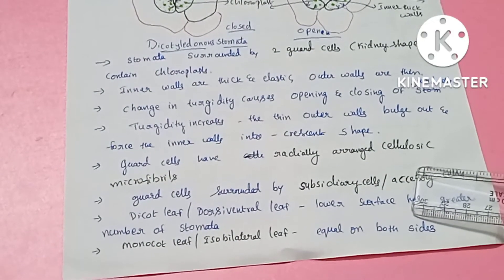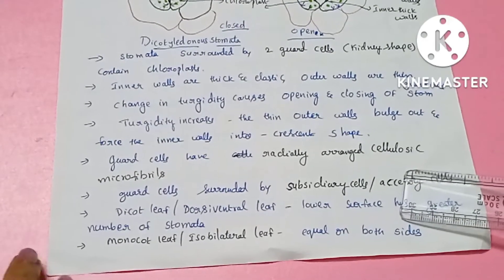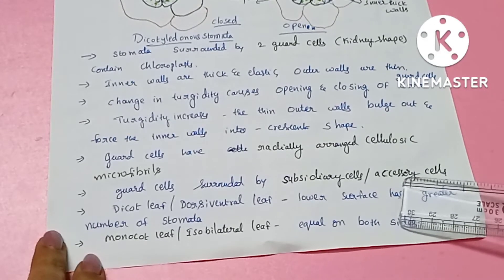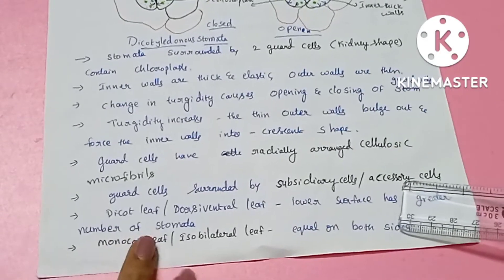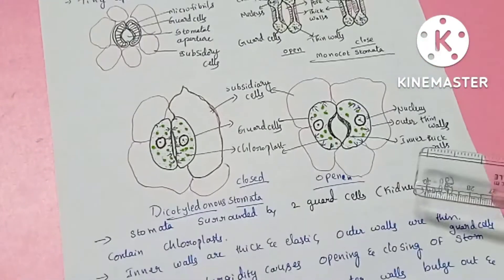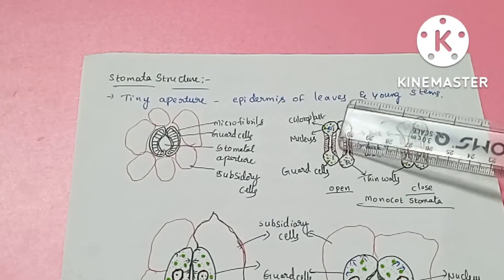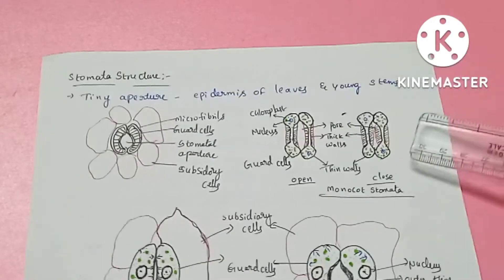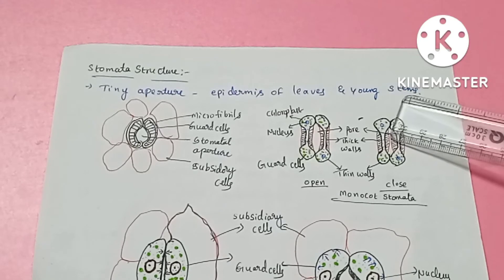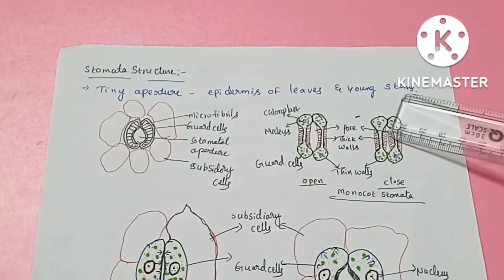In both sides of the monocot leaf, there is an equal number of stomata. In monocot leaves, the guard cells are ellipsoid or dumbbell-shaped. These dumbbell-shaped guard cells belong to the family Gramineae and Poaceae, which are the grasses.